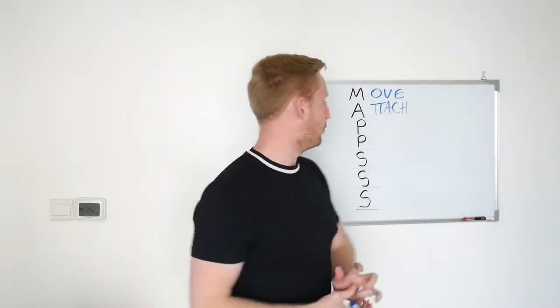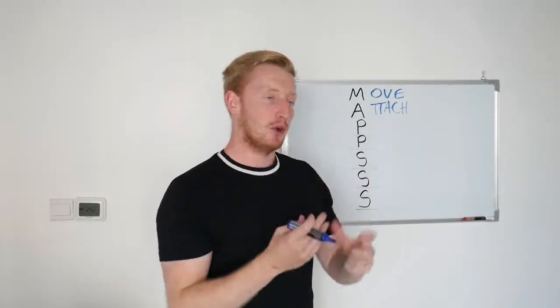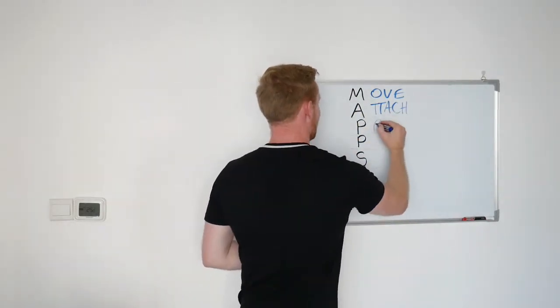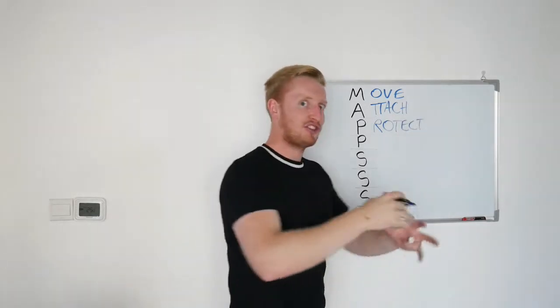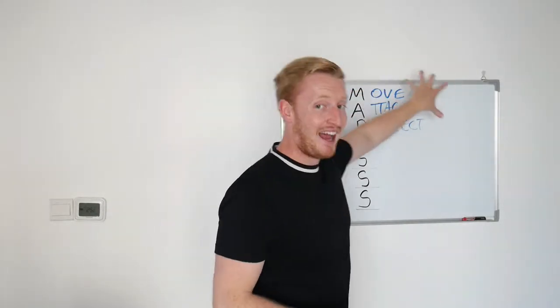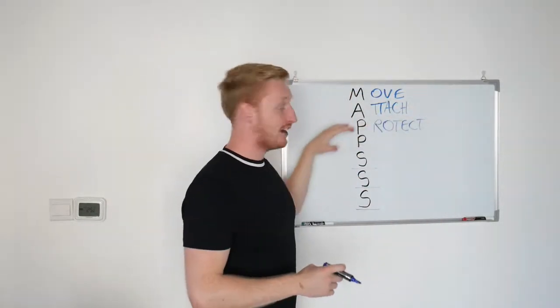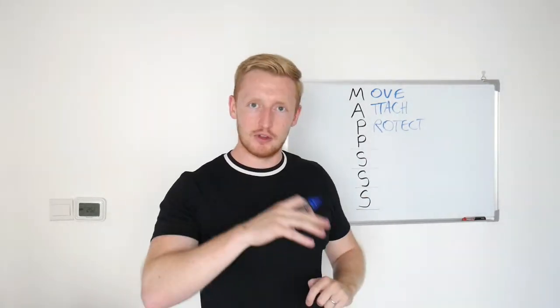So organs are attached to some bones and the bones around those organs help protect those organs connected to the bones. So we've got movement, attachment of muscles and organs, and the protection of the organs and soft tissues that reside in and around the bones.